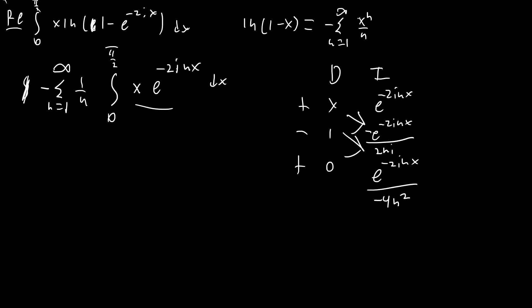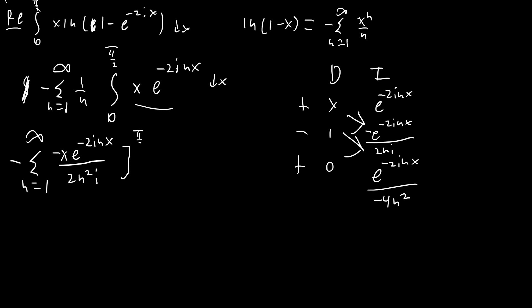So we're going to have the negative sum from n = 1 to infinity of 1/n, using each term from the table. This gives us x · e^(−2inx)/(−2ni) − e^(−2inx)/(−4n²), evaluated at π/2 and 0. Notice that at π/2, the exponent 2n is always a multiple of π, which means e^(−2inx) is just (−1)^n.